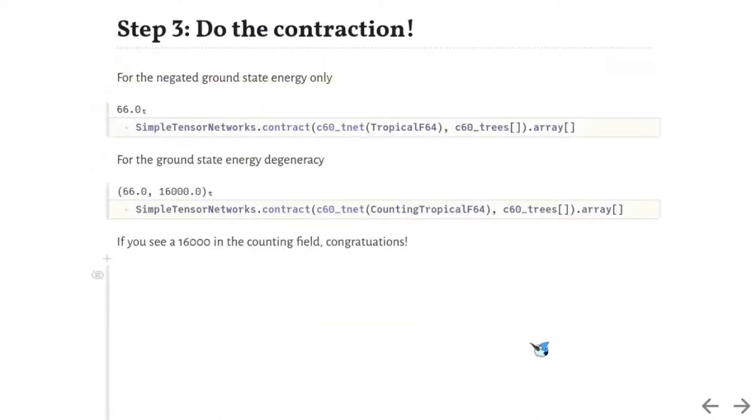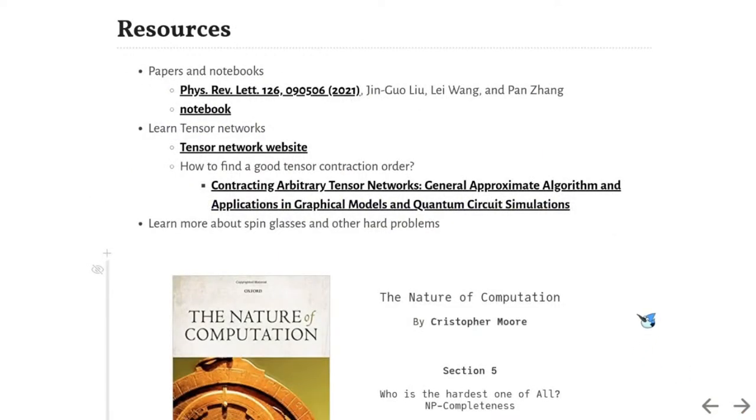For someone who can access this notebook, one can also visualize the contraction step by dragging the contraction step slider. The third step is obtaining the result by contracting the tensor network. One can use the tropical type for obtaining the ground state only, or the counting tropical type for obtaining both the ground state energy and its degeneracy. If you see 16,000 in the counting field, then congratulations, you get the correct answer to this challenge.